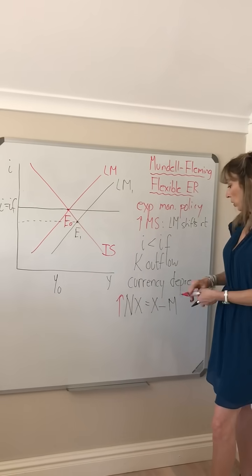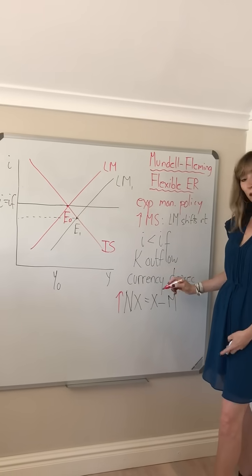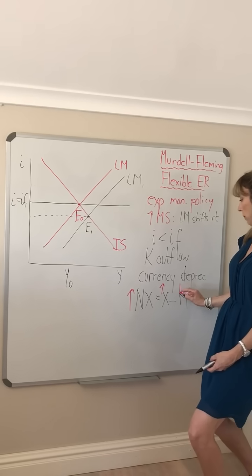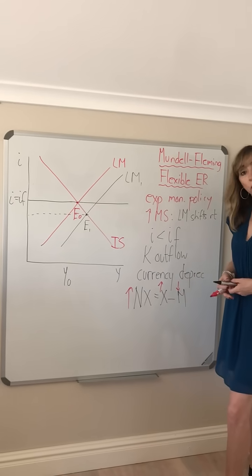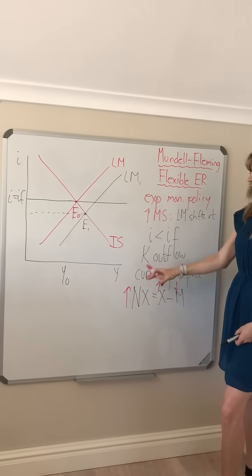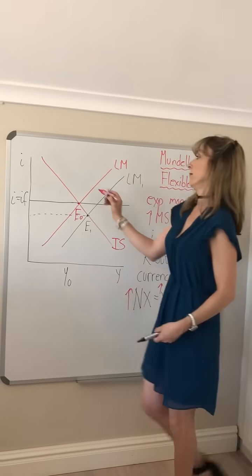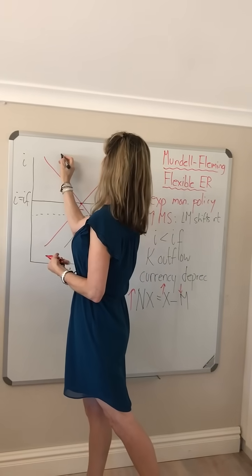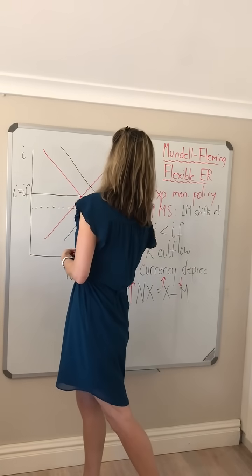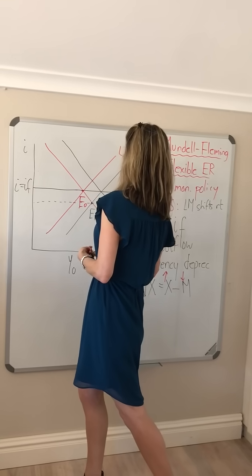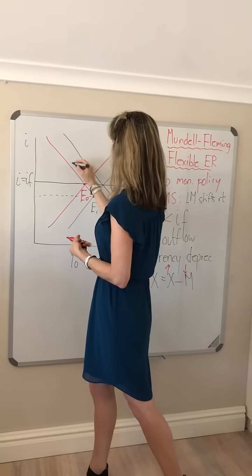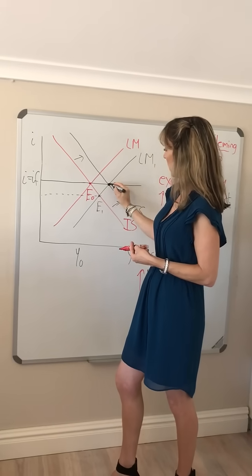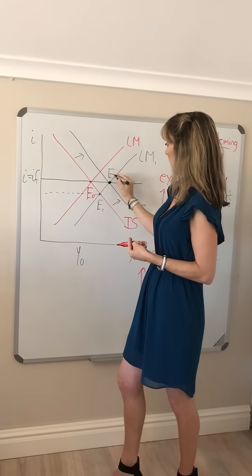With depreciation, our goods — South African goods, say — become cheaper, so our exports rise. We import less because foreign goods become more expensive. So when net exports rise, it's going to shift our IS curve to the right. And our final equilibrium is going to be here at E2.